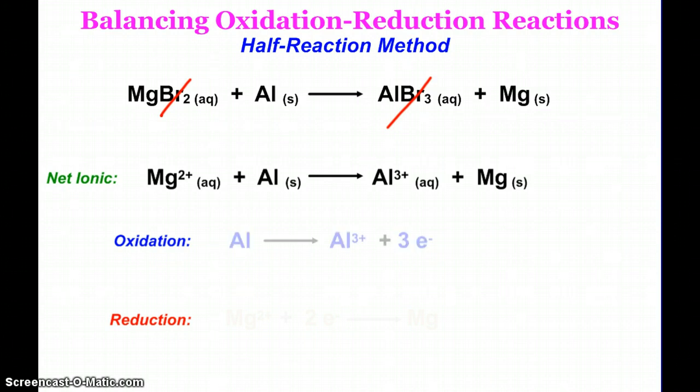And so my oxidation half reaction, aluminum is losing three electrons. Aluminum to aluminum plus three. As far as the oxidation numbers are concerned, aluminum zero, the ion plus three. Reduction wise, magnesium ion is gaining two electrons to become elemental magnesium metal. So oxidation number wise, plus two for the magnesium ion, zero for the magnesium in its elemental form.